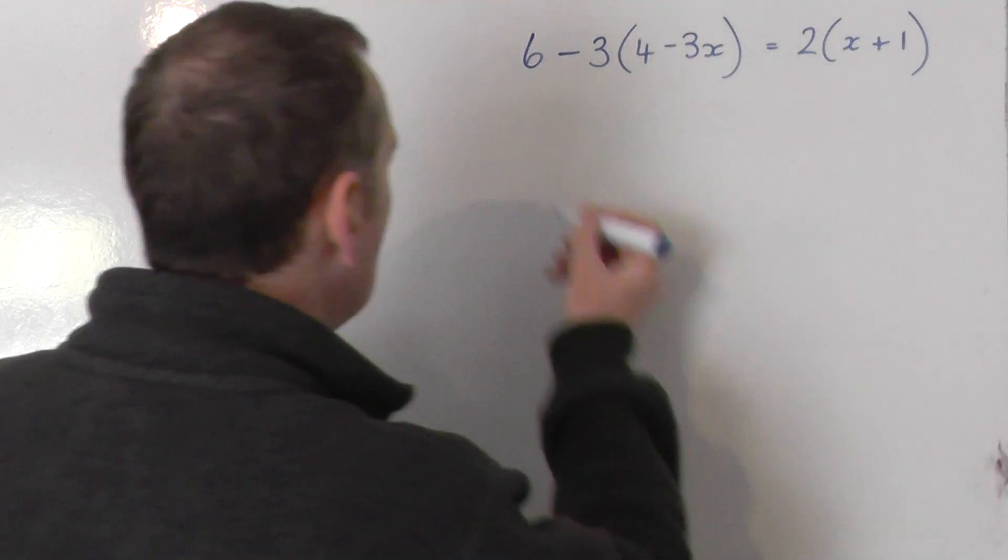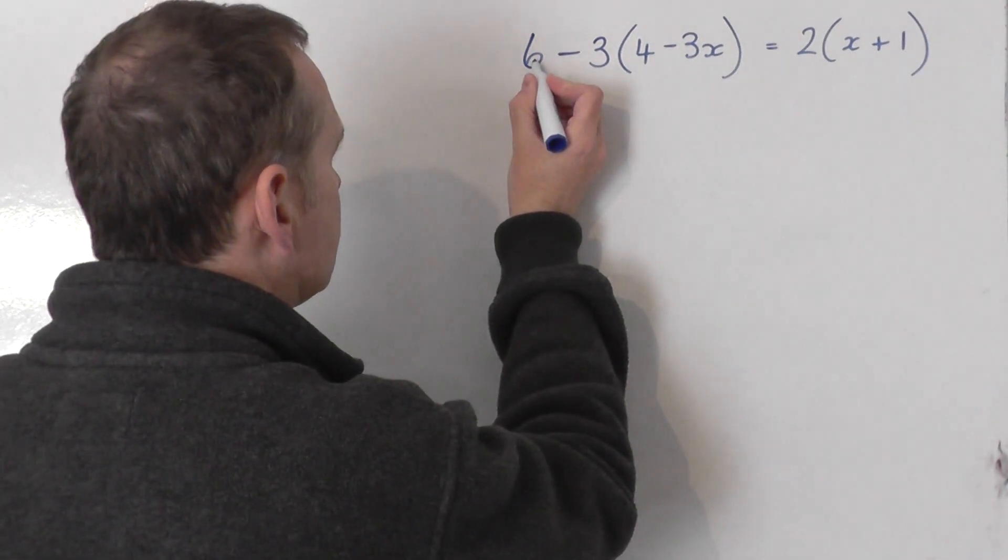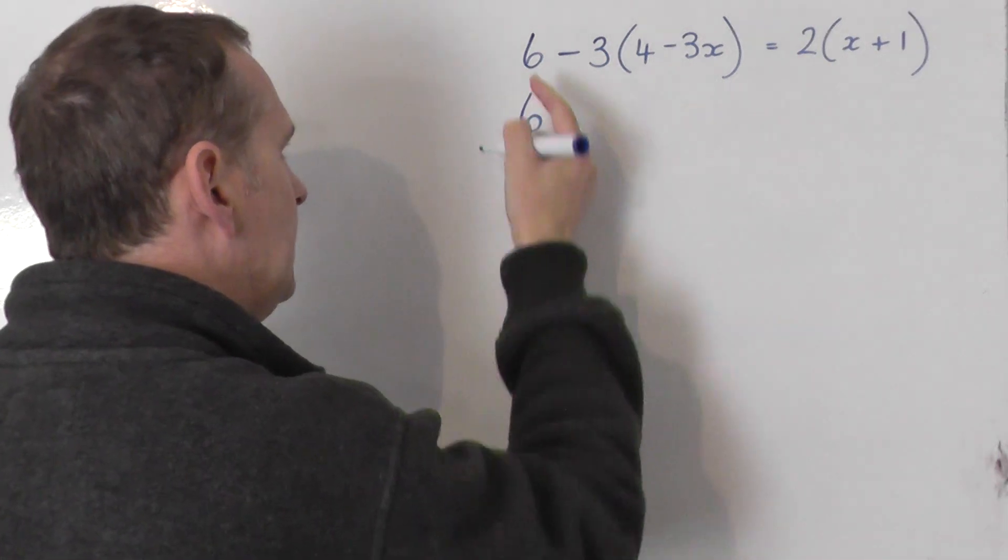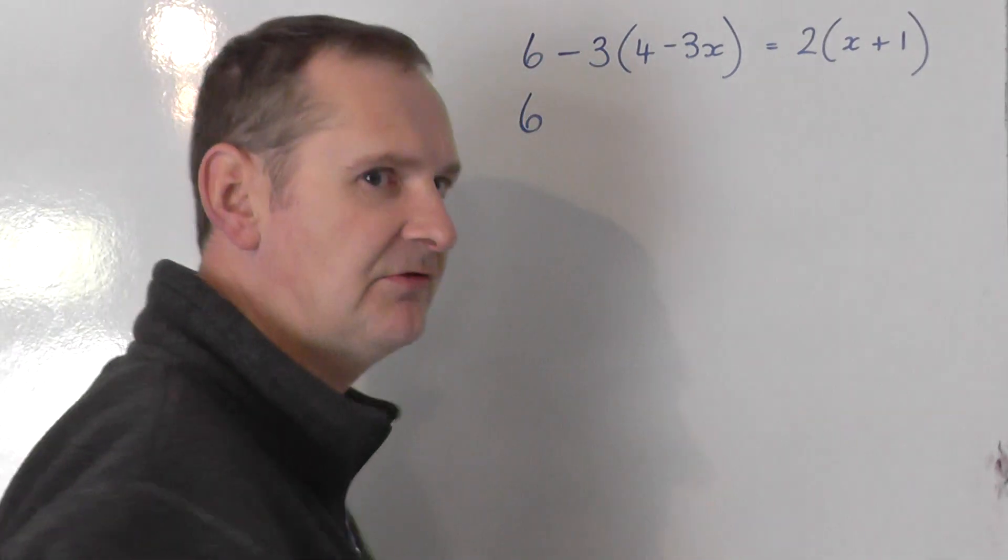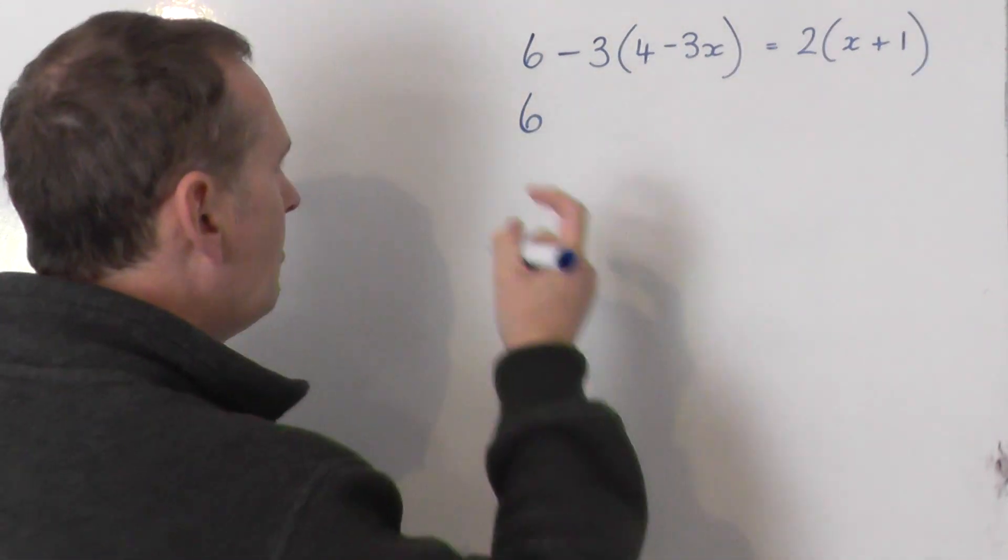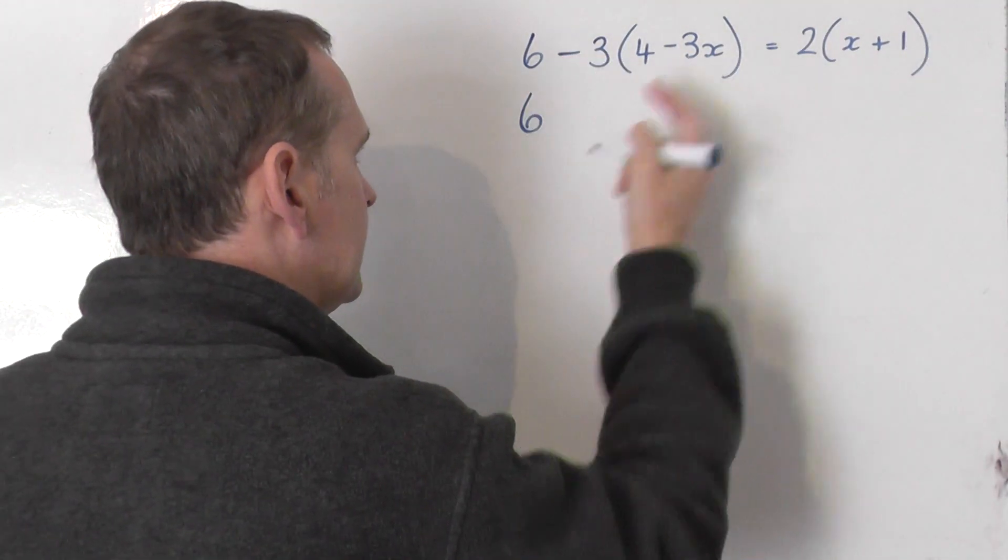Here we go then. Well first of all we've got 6 take away 3 lots of the bracket. The 6 goes straight down. You do not work out 6 take 3 is 3 and then say 3 lots of the bracket. The 6 goes straight down and what you've got is then take away 3 lots of the bracket.